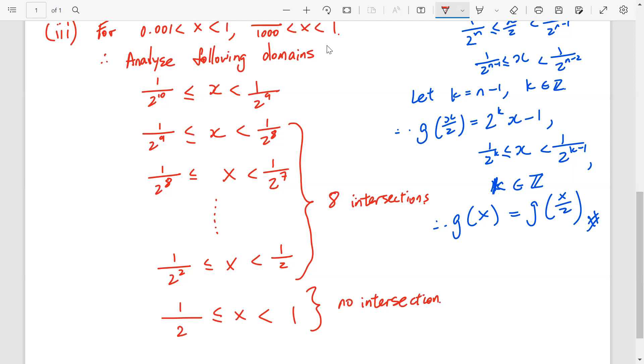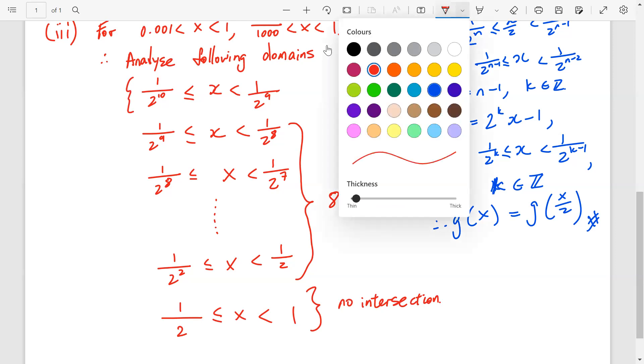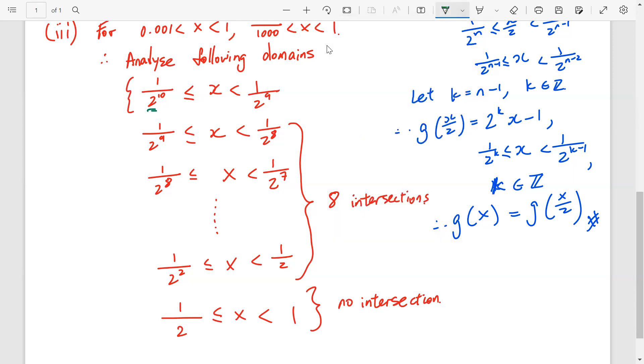Now, the final clue to the puzzle, is for this first one. Because, 2 to the power of 9. Let me just, change to green here. 2 power 10, or this whole thing, it's actually 1 over 1024, x, 1 over 512. So, we are concerned, whether the intersection, for this part...